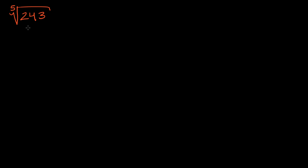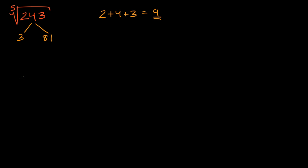If we use the factoring technique, 243 is not divisible by two. I like to start with the smallest possible factor. Is it divisible by three? You add up the digits and see if that sum is divisible by three. Two plus four plus three equals nine, so yes, it is divisible by three. So this is going to be equal to three times 81, and 81 is also divisible by three.